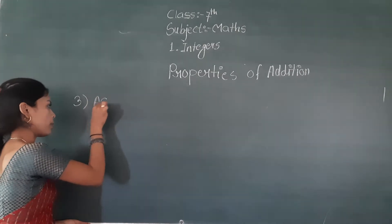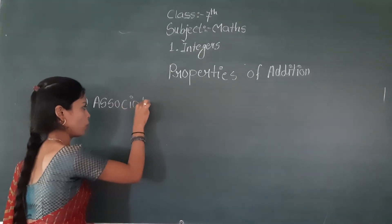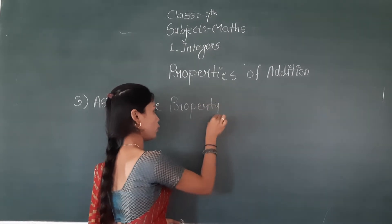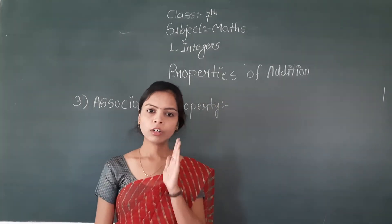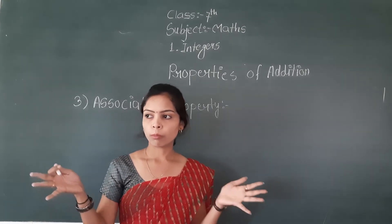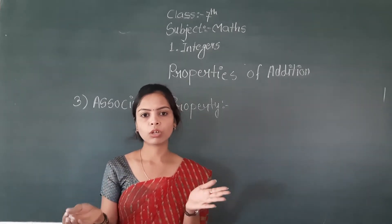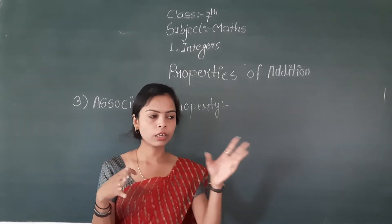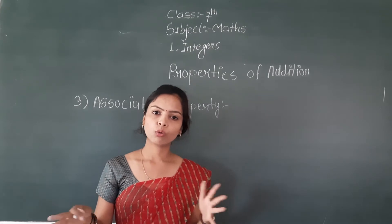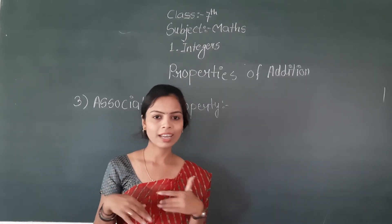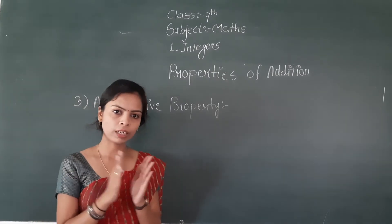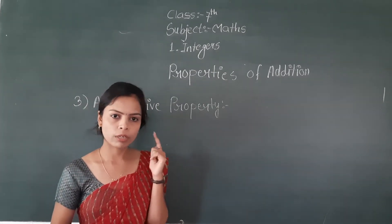What is the third property? The third property is associative property. You have heard the word 'association.' When we talk about associative property, we are talking about grouping. Different types of grouping.